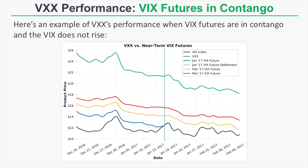So this is just an example of how when the VIX index is low and the VIX futures are in a state of contango — which means the VIX futures trade at a premium to the VIX index — if the VIX index does not rise, those near-term VIX futures are going to decay in value as they converge towards the VIX. Since those near-term VIX futures are losing value, VXX is also losing value because the performance of VXX is tied to the daily percentage returns of those near-term VIX futures.